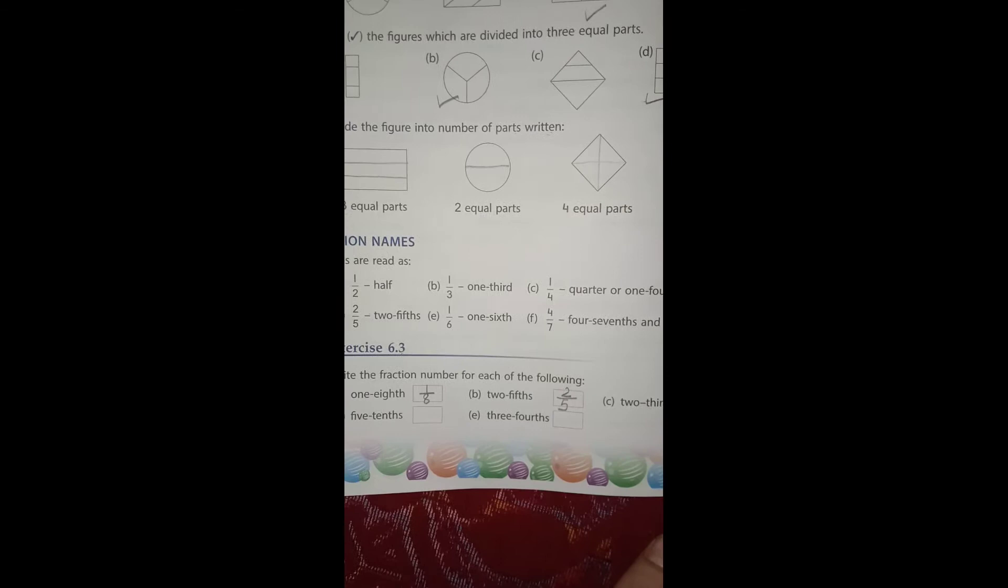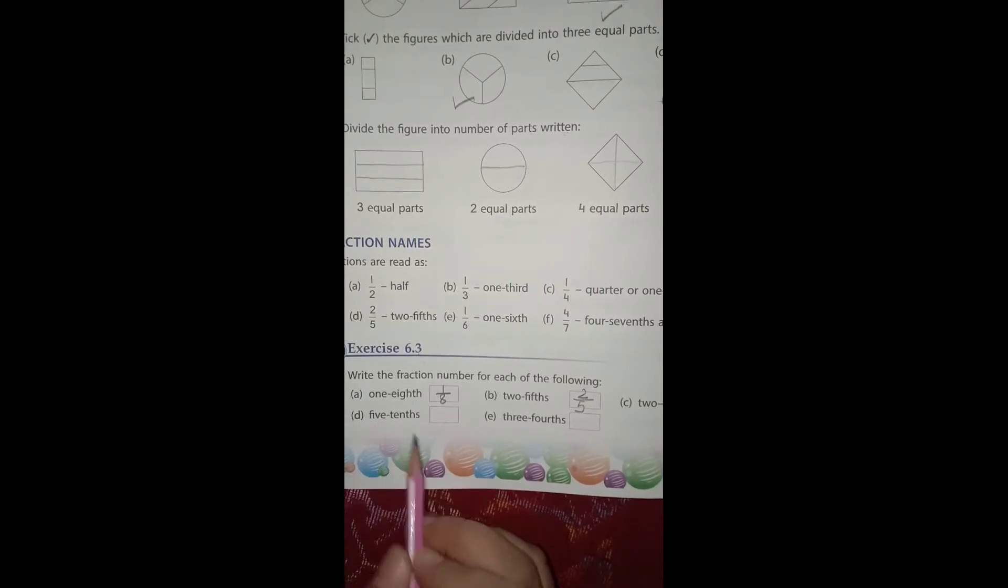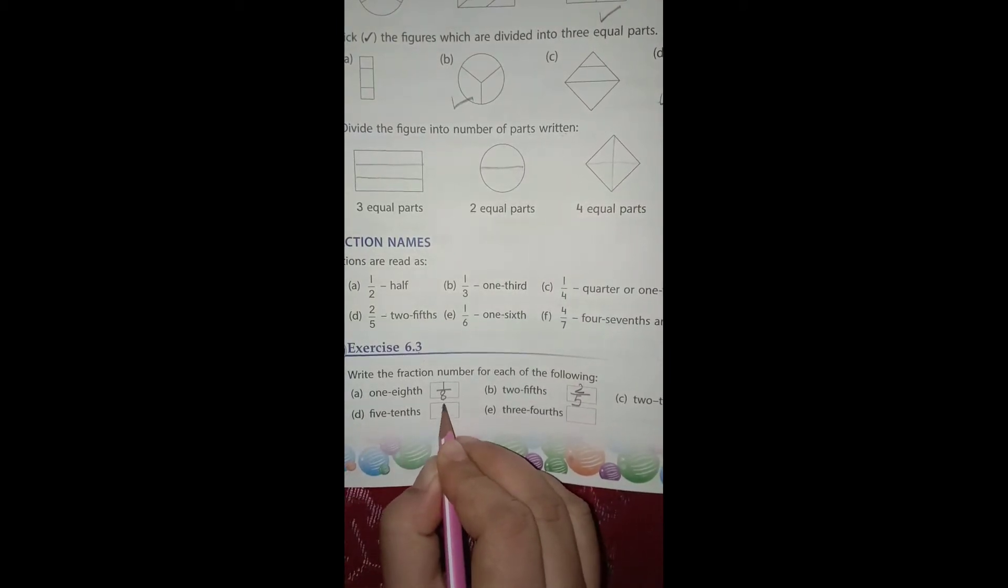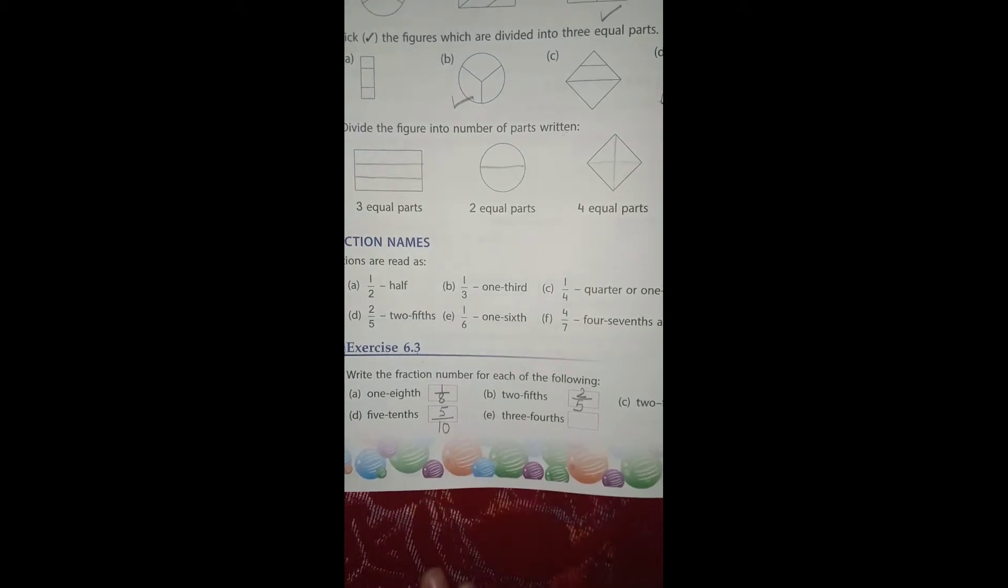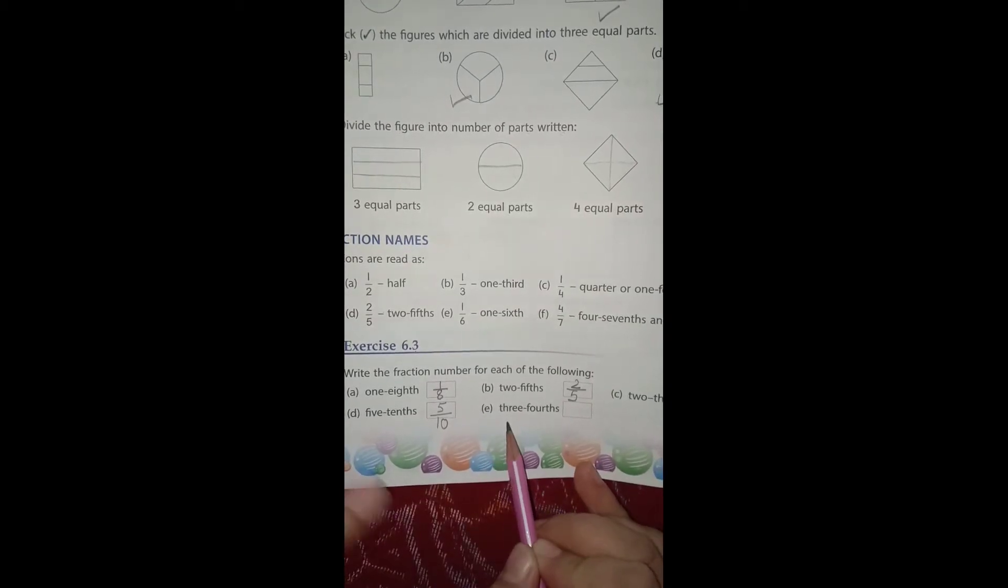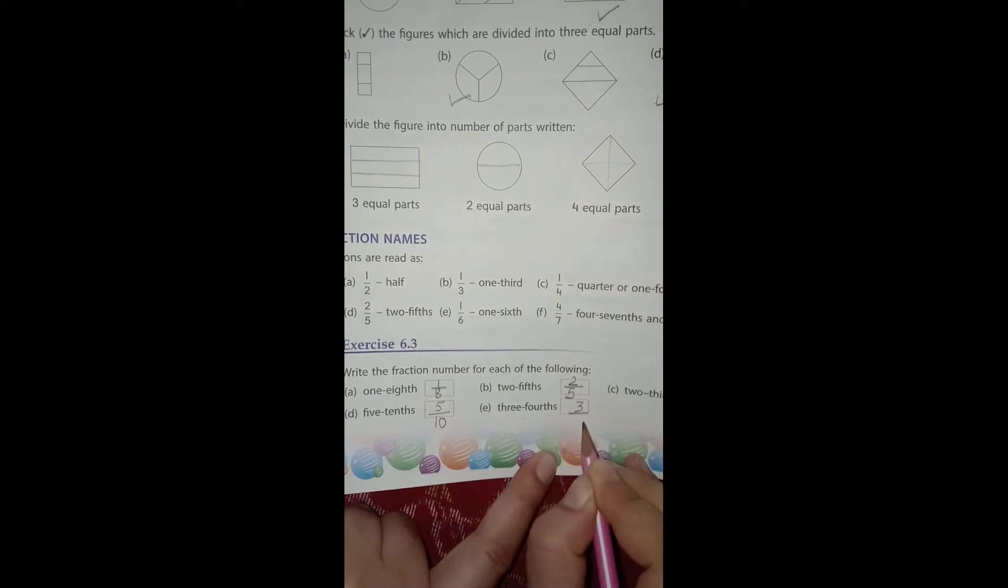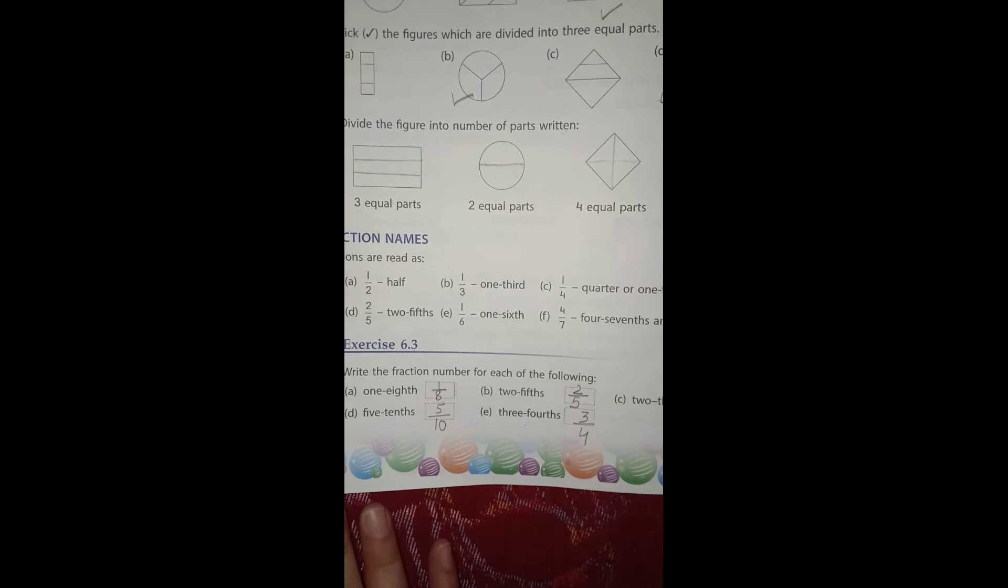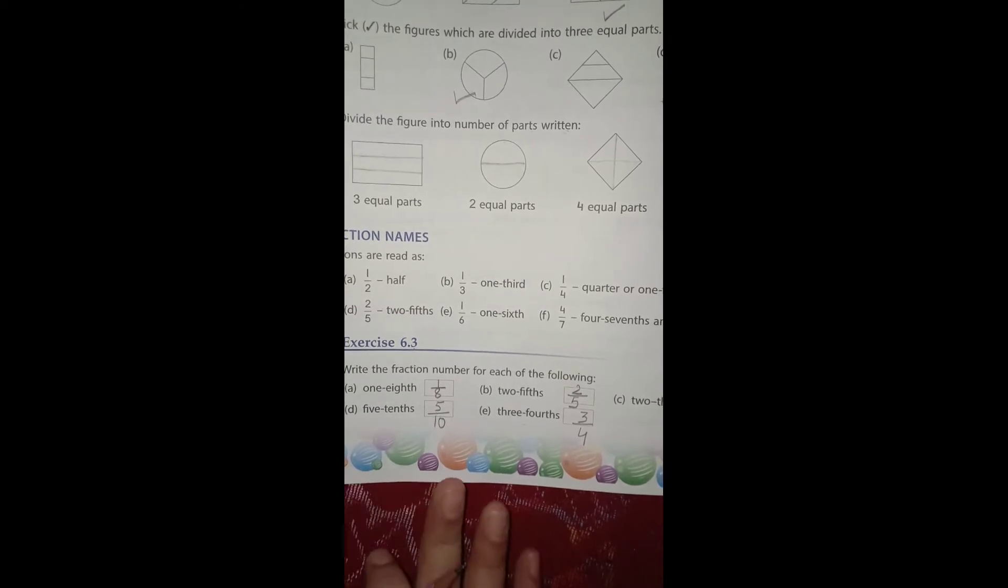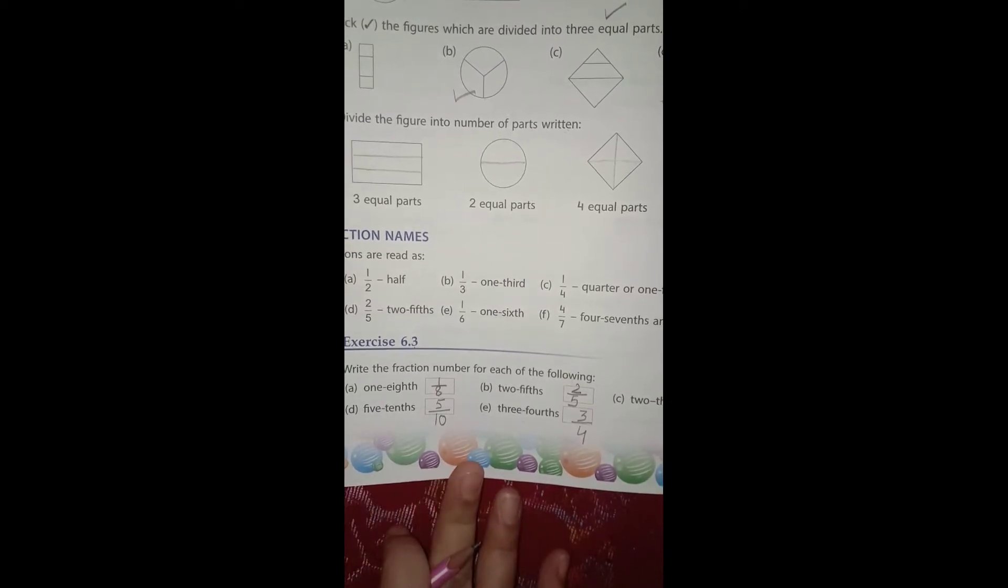Part D, five-tenths: 5 as numerator and 10 as denominator. Part E, three-fourths: 3 as numerator and 4 as denominator. This is how you can write fraction numbers for the given fraction names.